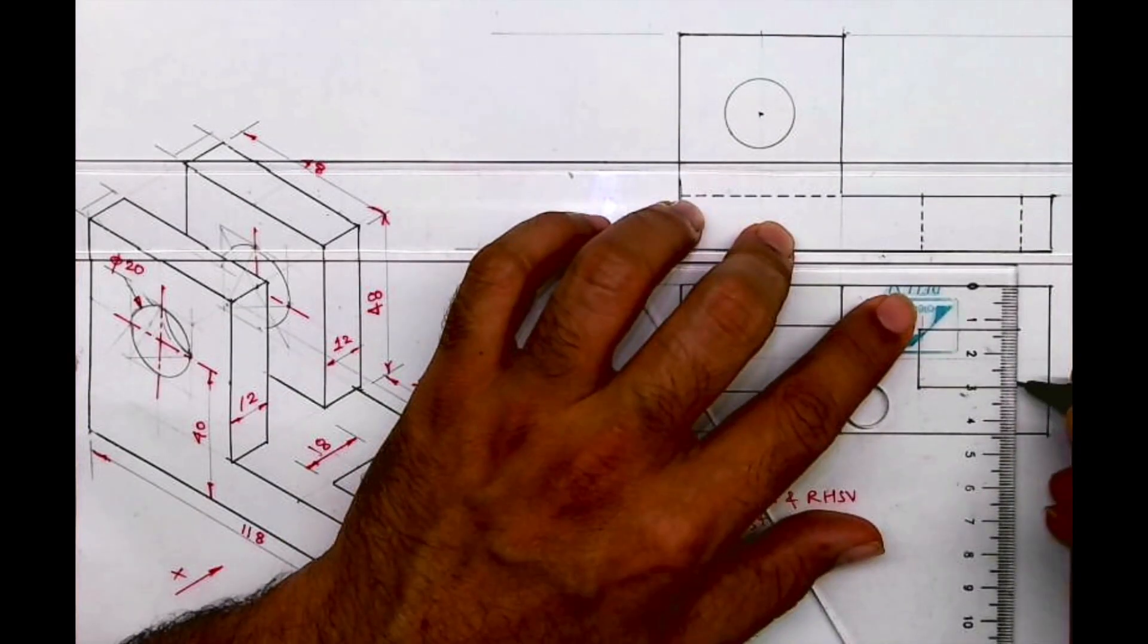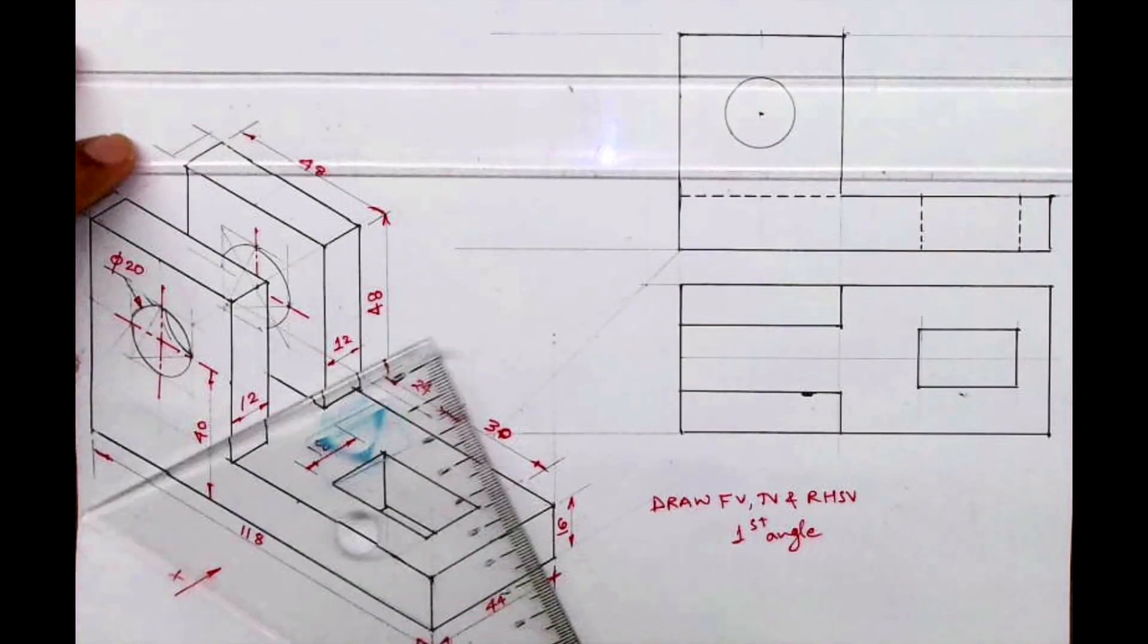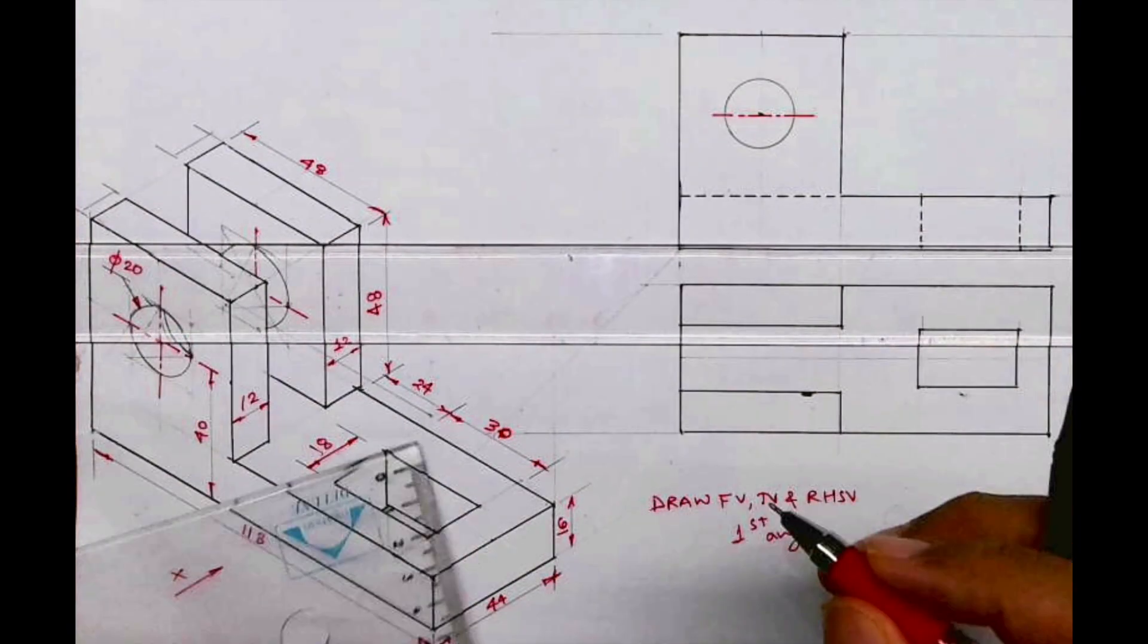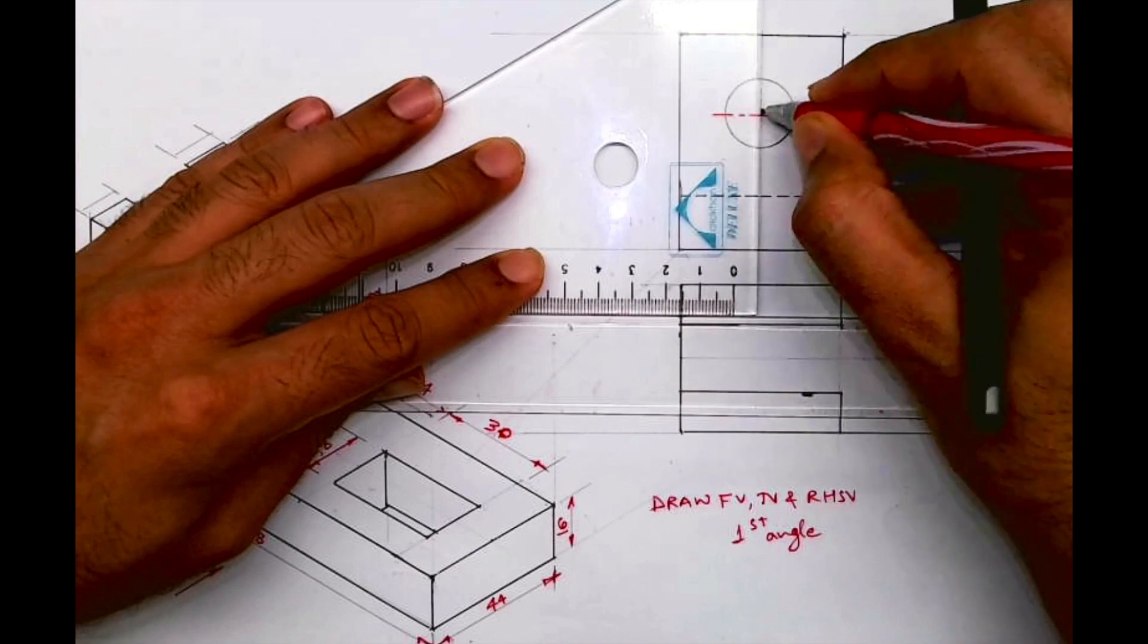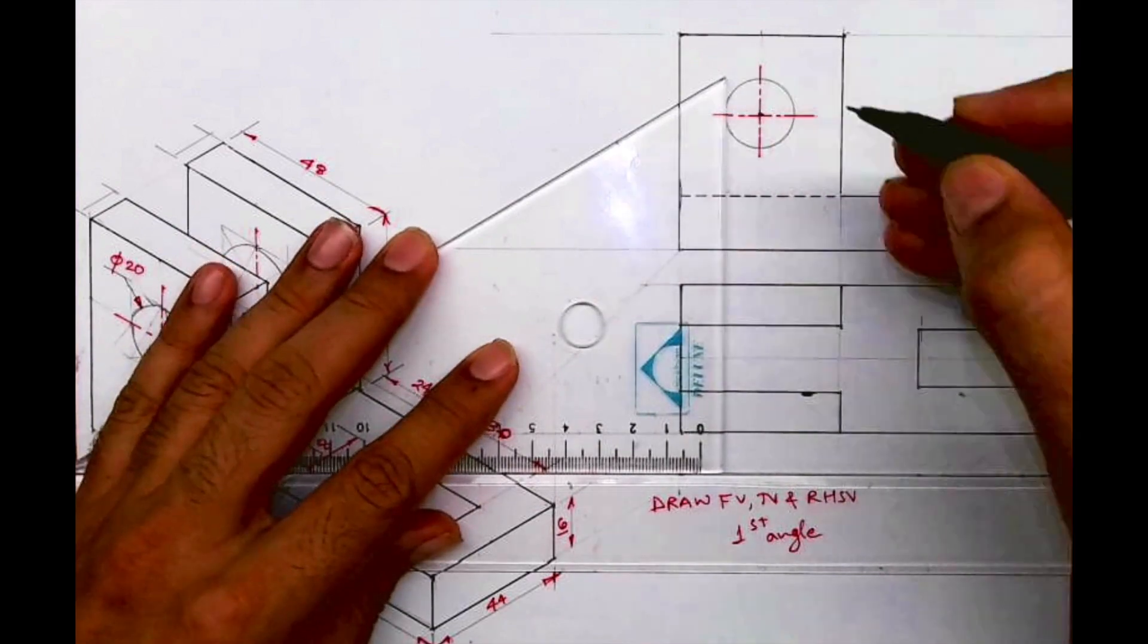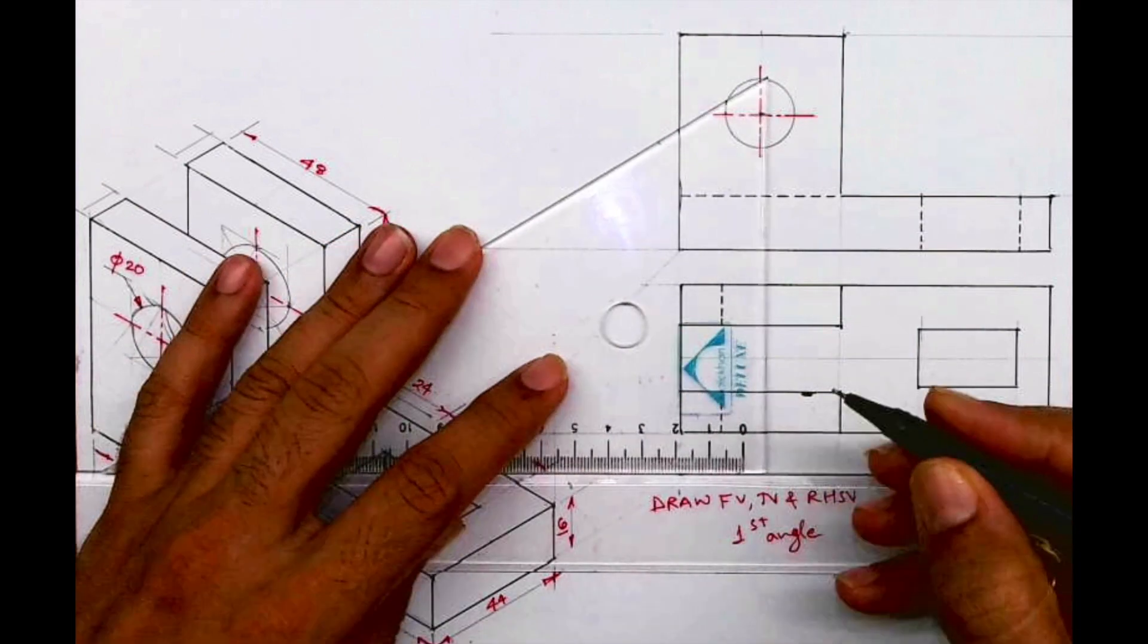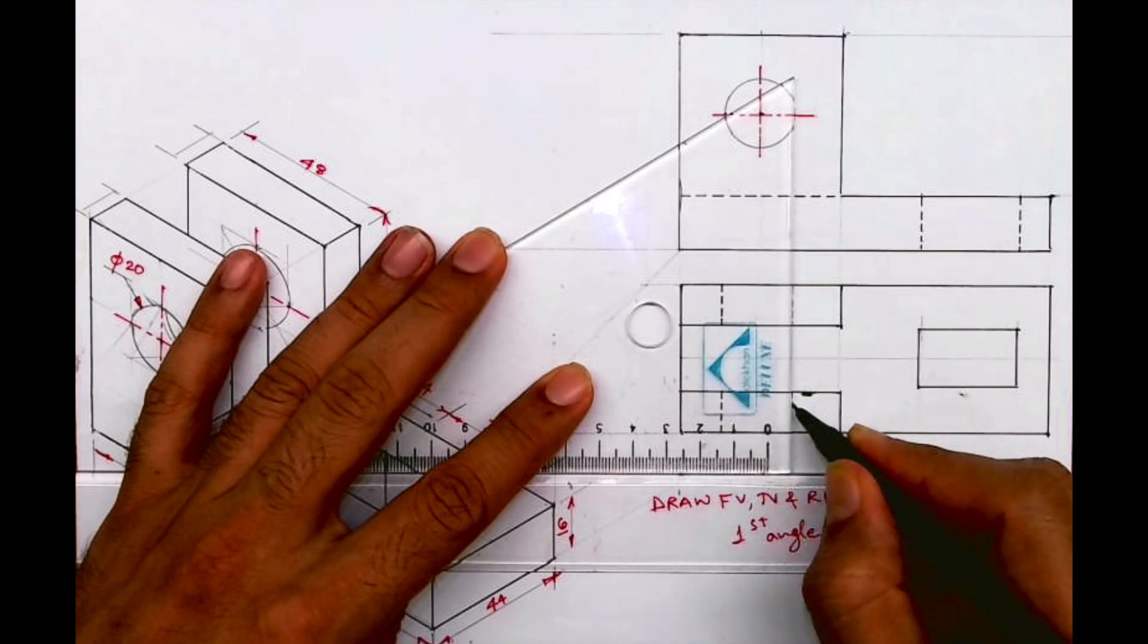Now we need to draw dotted lines for the top view. I will draw a line from here, and this will be dotted. This will be dotted, this will be dotted. Same way, here it will be dotted, and here also it will be dotted.